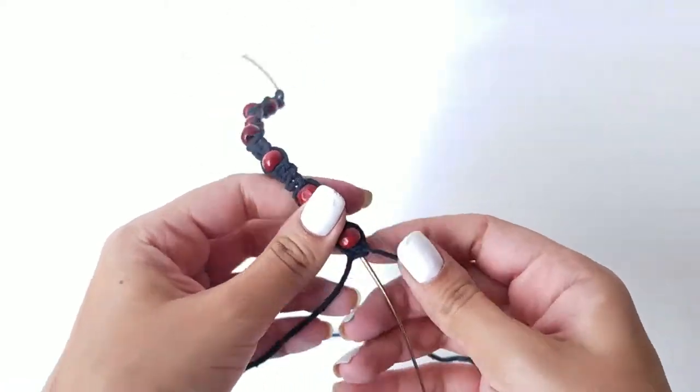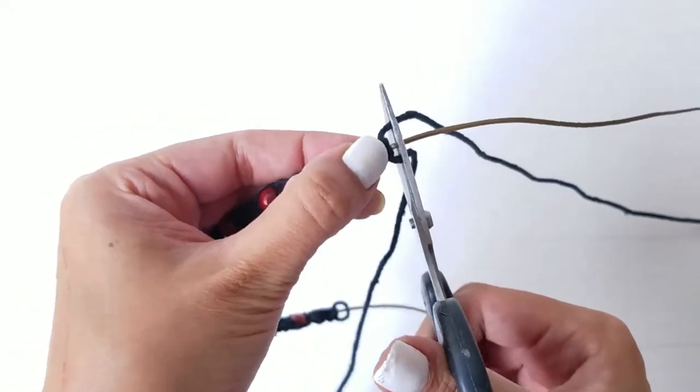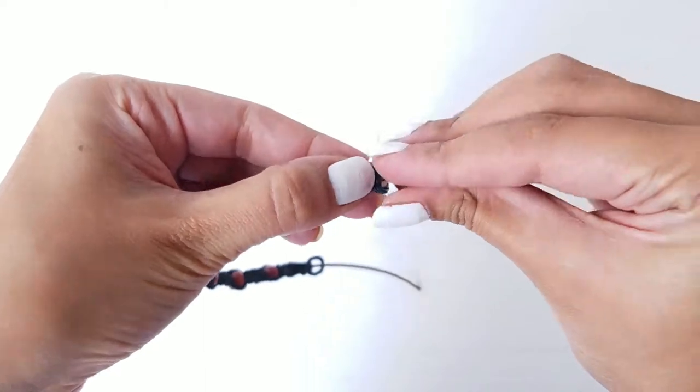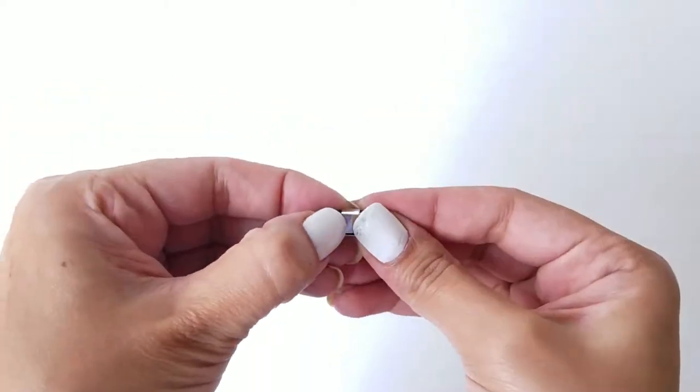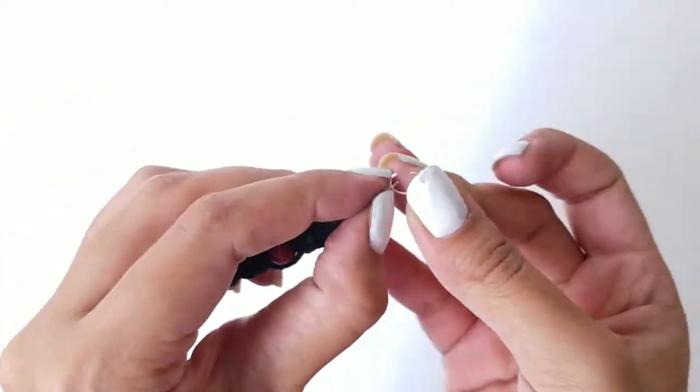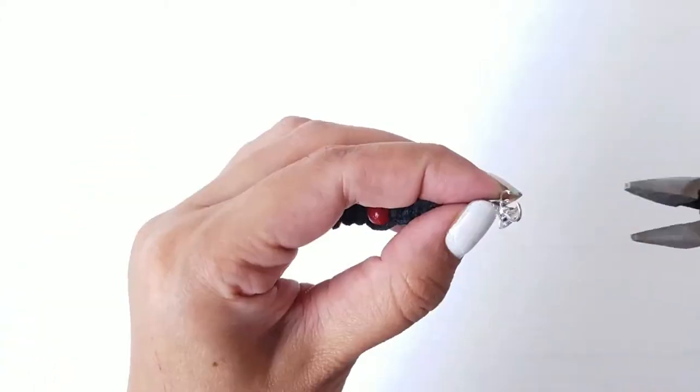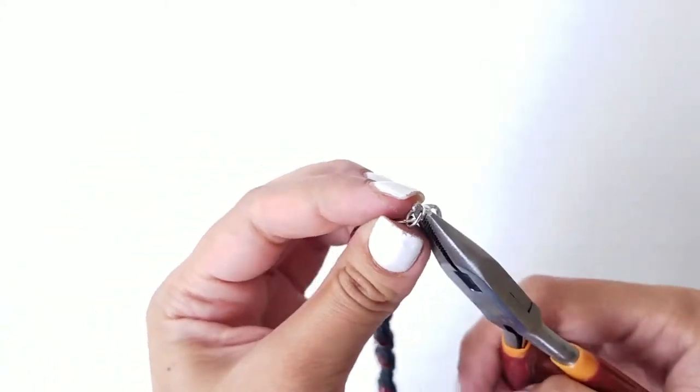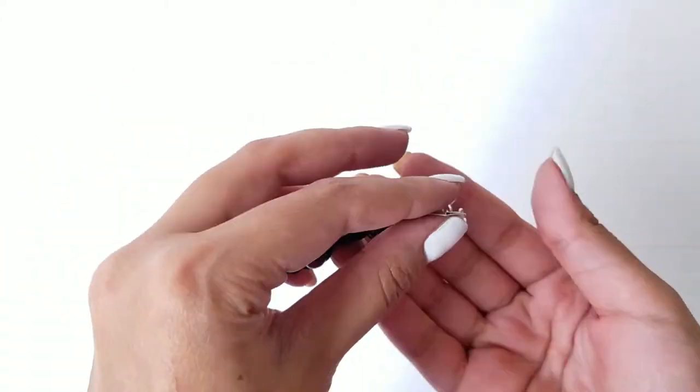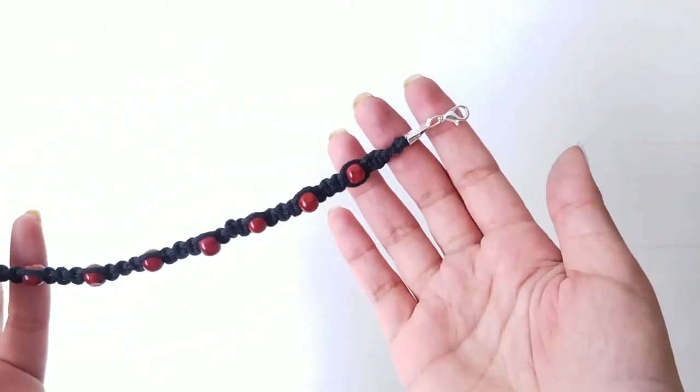Cut all the strings once you reach the desired length and of course attach the jewelry clamp, jump ring and a hook to secure in place. You're all set to rock this beaded macrame bracelet.